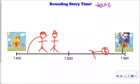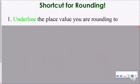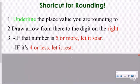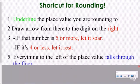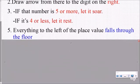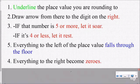So maybe you don't want to draw a number line, but now you're starting to understand. Here is our shortcut for rounding that you'll see in our song: First, you want to underline the place value you are rounding to. Then you're going to draw an arrow from there to the digit on the right. If that number on the right is five or more, then you let it soar. If it's four or less, you let it rest. Everything to the left of the place value falls through the floor, and then everything to the right becomes zeros.